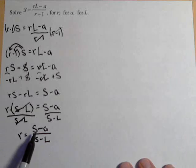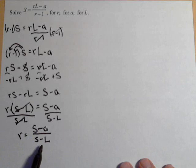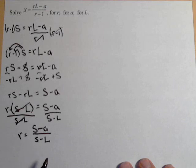You may be tempted to cancel out these S's. Do not do it. We do not have a product on top and bottom. We have subtraction. So we cannot cancel out those S's. So that's solving for R.